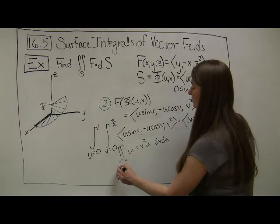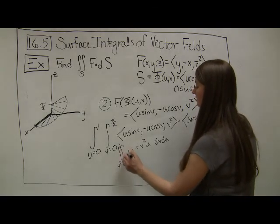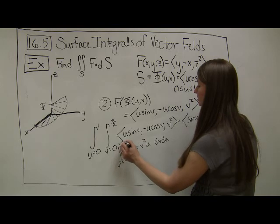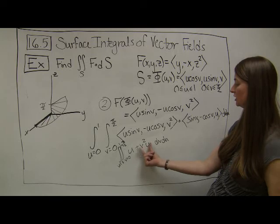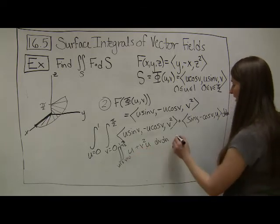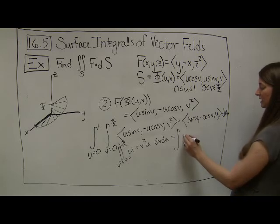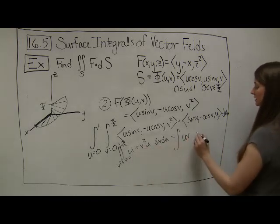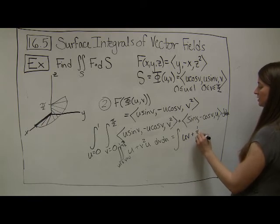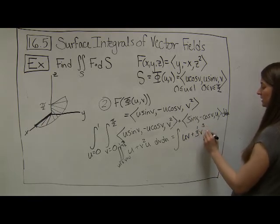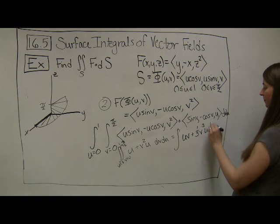Which isn't that bad at all to integrate. First, I'm going to integrate v equals 0 to π/2. So I integrate with respect to v first, treating u as a constant. I end up with, not forgetting my integral on the outside, I get uv, treating u as a constant, plus one third v³ u evaluated from v equals 0 to π/2.